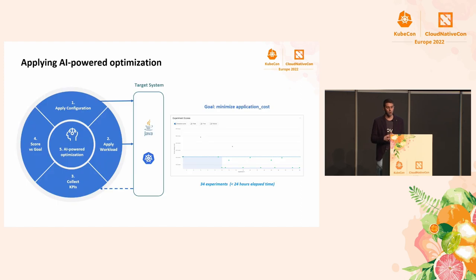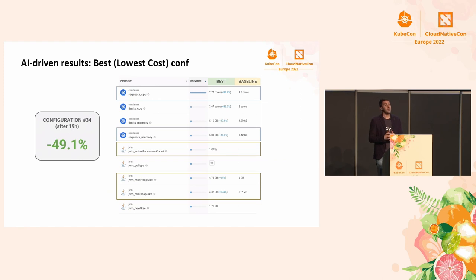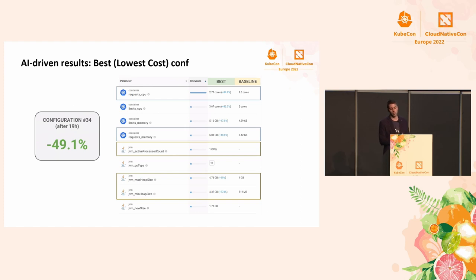So, what did we do? We now know how the baseline behaves — let's start optimizing. What we did was start experimenting with different Kubernetes and Java configurations suggested by our AI algorithm and measure the results. The best configuration identified by our AI with respect to the defined cost efficiency goal was found at experiment number 34, after about 90 hours of trials, and provides a 49% improvement in cost with respect to the baseline.